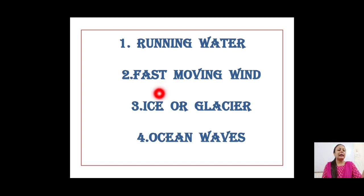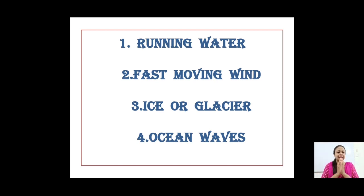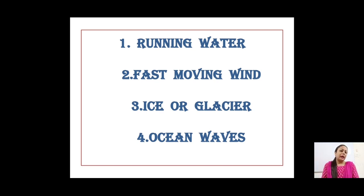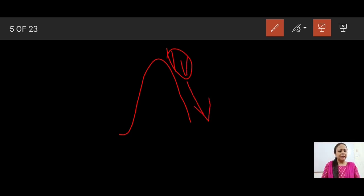The third agent is ice, found in very cold areas or at very high altitude where temperature is very low. Water freezes into ice forming huge masses called glaciers. These glaciers are so big and heavy that when they slide down the slope of a mountain, they cause both weathering and erosion. Here is a diagram — when a glacier slides down a mountain slope, it breaks and erodes a lot of rock particles.